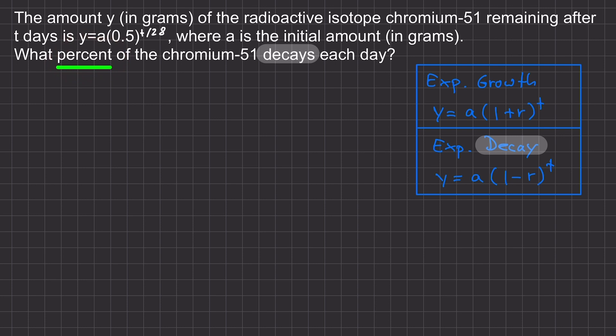So, what we have to do is to rewrite this equation into the exponential decay model to see what r is. How can we rewrite this into the exponential decay model form, where we have only the t as an exponent and not t over 28?